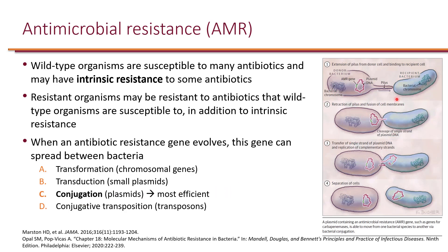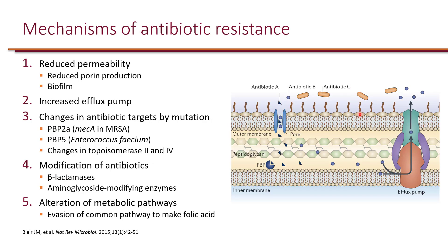You can see in the picture on the right-hand side the different steps of conjugation. Lastly, there can be conjugative transposition. As opposed to chromosomes and plasmids, transposons are specialized sequences of DNA that possess their own recombination enzymes, allowing transposition or hopping from one location to another, independent of the recombination enzymes of the host.